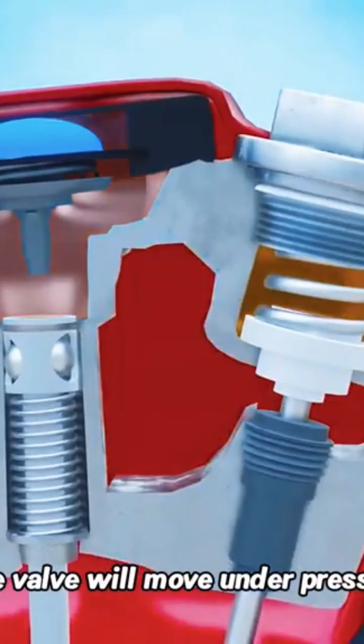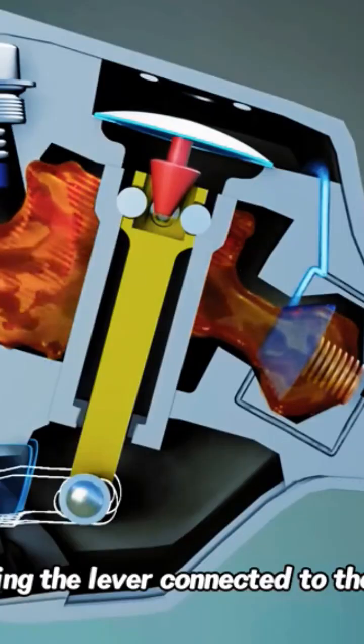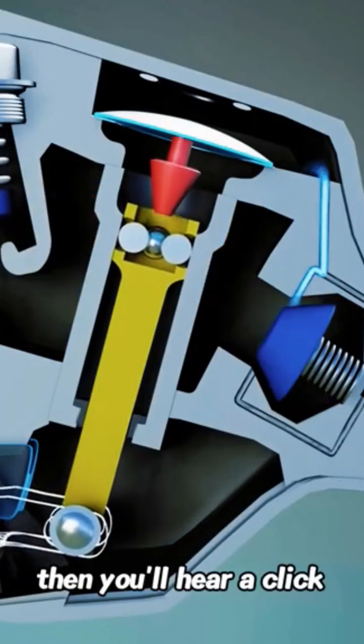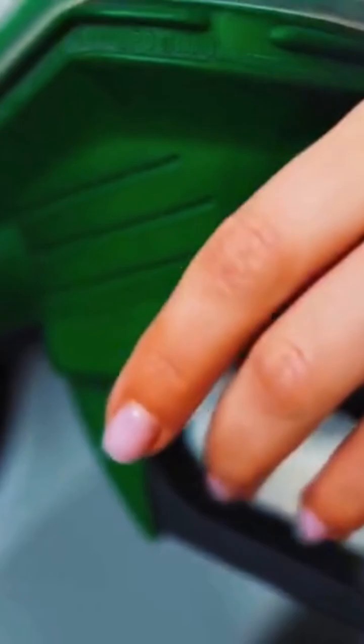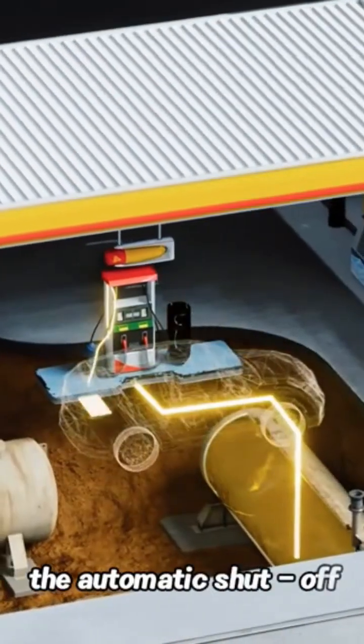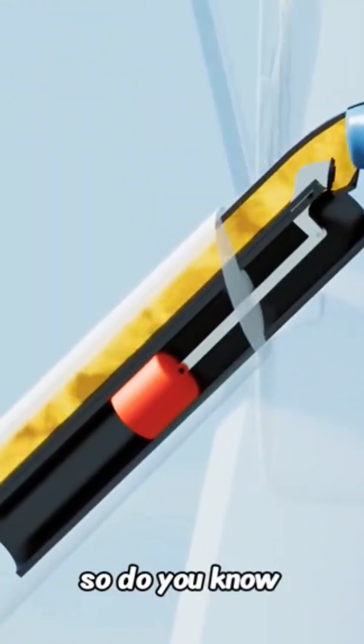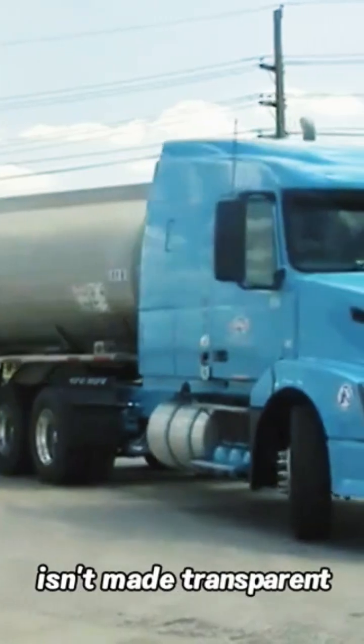At this time, the valve will move under pressure, triggering the lever connected to the handle. Then you'll hear a click and the fuel nozzle shuts off automatically. This is the principle of the automatic shutoff. So do you know why the fuel nozzle isn't made transparent?